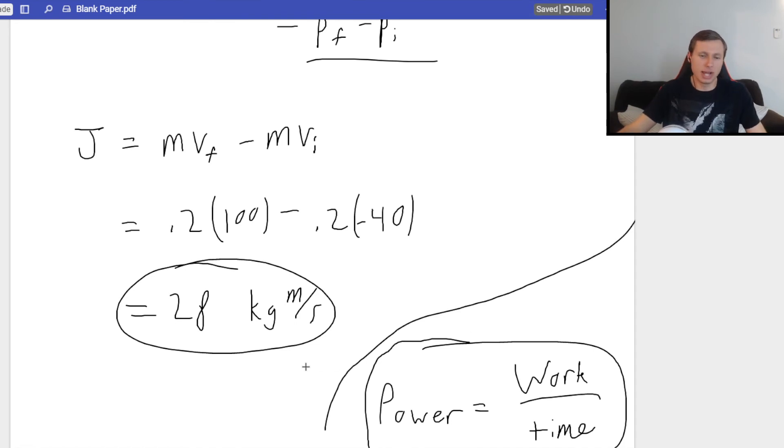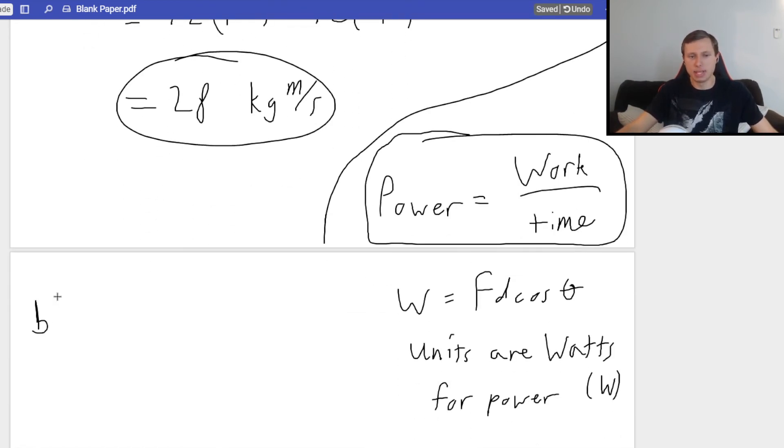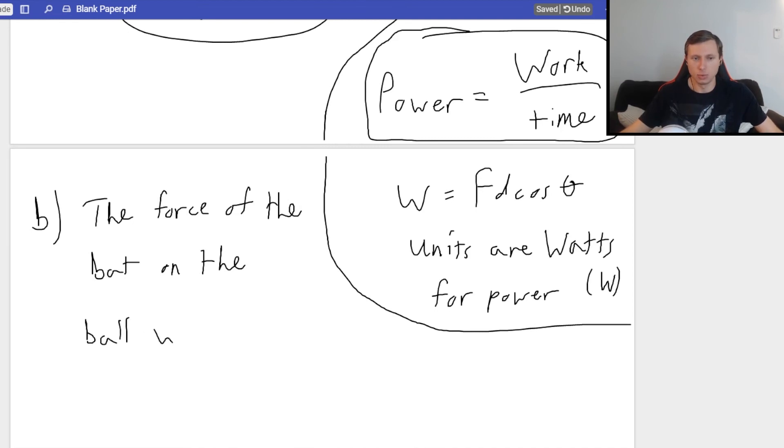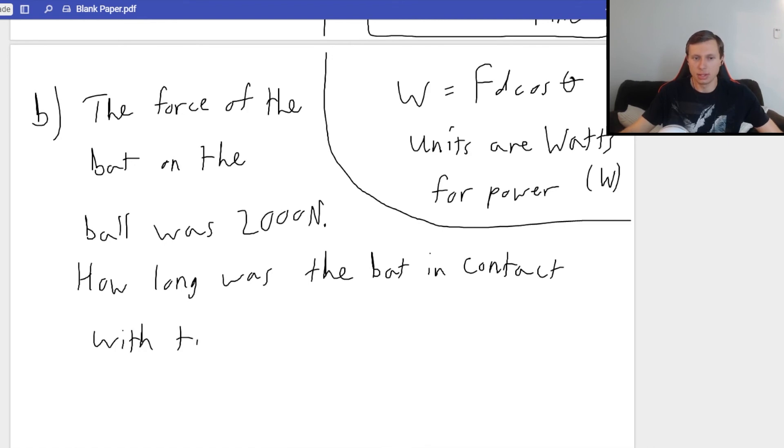Any questions on part A? Okay, so the last question, part B. Let me just wall off. This was power again. So I'm going to say the force of the bat on the ball was 2,000 newtons. How long was the bat in contact with the ball?